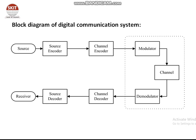Then comes the channel, which is the medium through which information is transmitted. This can be wired or wireless depending on the type of application. The receiver performs the opposite process of the transmitter — it consists of the demodulator, channel decoder, source decoder, and receiver. In the channel decoder we remove the bits added by the channel encoder, and in the source decoder we restore the bits removed by the source encoder. This completes the digital communication process.